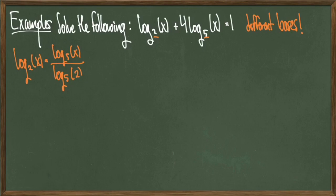We know that log₂(x) = log₅(x)/log₅(2). Pulling this substitution into our equation, we get that log₅(x)/log₅(2) + 4log₅(x) = 1.